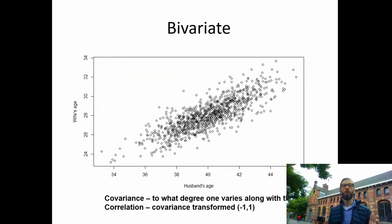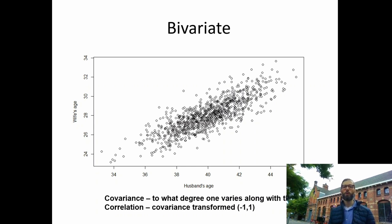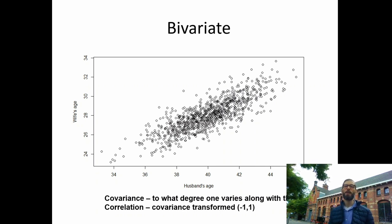If we have two variables — for example, the age of both spouses in a couple — we can examine their covariance or correlation. The covariance represents to what degree the husband's age varies along with his wife's age, and the correlation standardizes that by dropping the units of measurement and giving us a measure of association on a minus 1 to plus 1 scale.